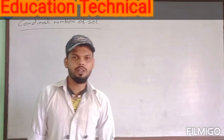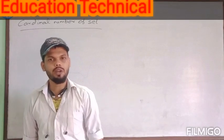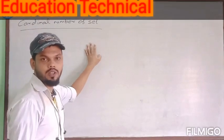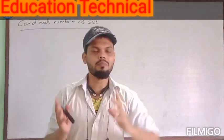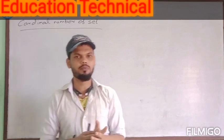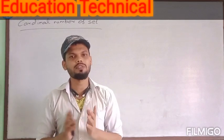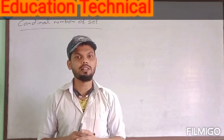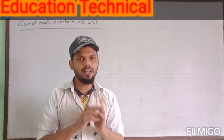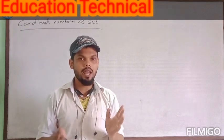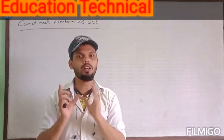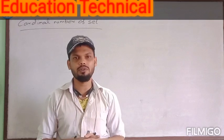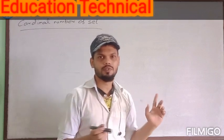Hello students, today in this video we are going to discuss about the cardinal number of a set. The cardinal number of a set means the total number of elements contained by the given set. If any set contains elements and we count the total number of those elements, that is said to be the cardinal number of the set.